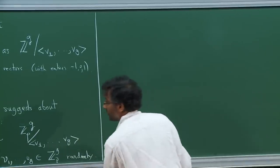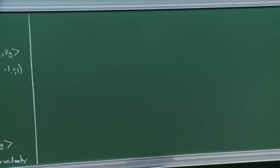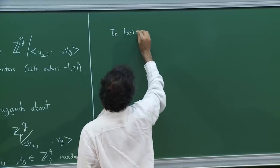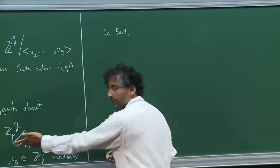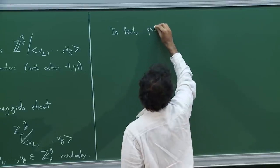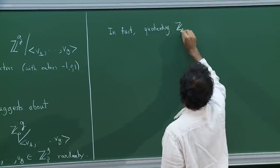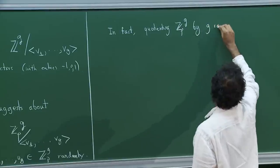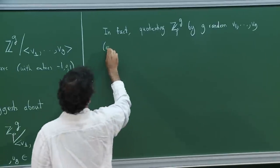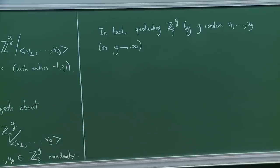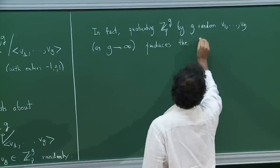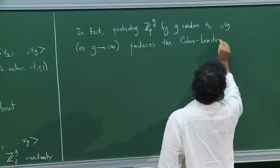This is some way to produce a p-group, and in fact this way already showed up yesterday in a different context. You can very precisely understand what this process produces. Quotienting Z_p to the g by g random elements, at least in the limit as g goes to infinity, produces exactly the same distribution that you see in the Cohen-Lenstra heuristics.